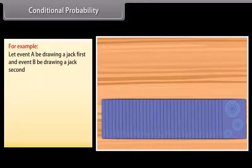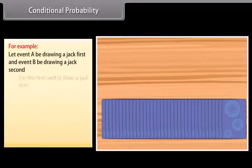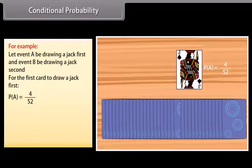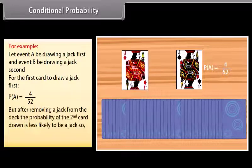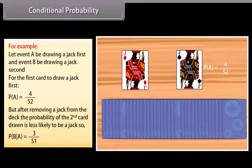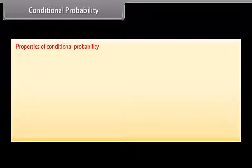For example, let event A be drawing a jack first and event B be drawing a jack second. For the first card, the probability of drawing a jack is 4 by 52. After removing a jack, the probability of the second card being a jack is less likely, so the conditional probability of B given A is equal to 3 by 51.